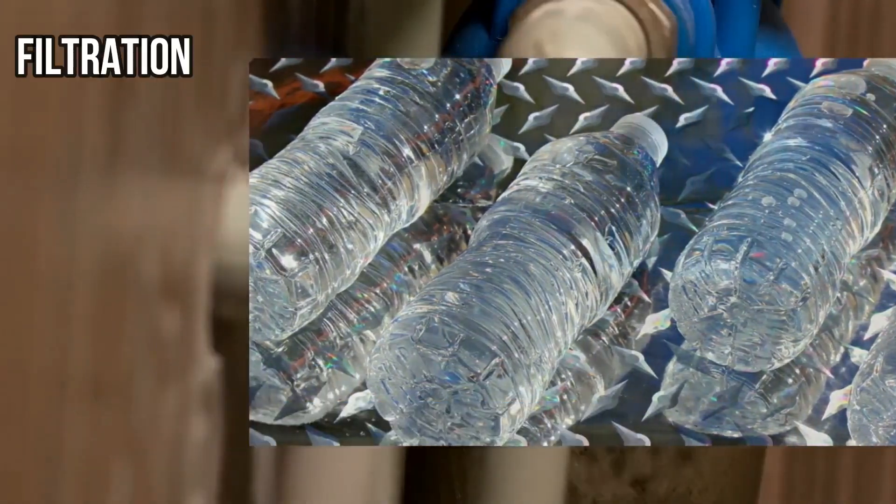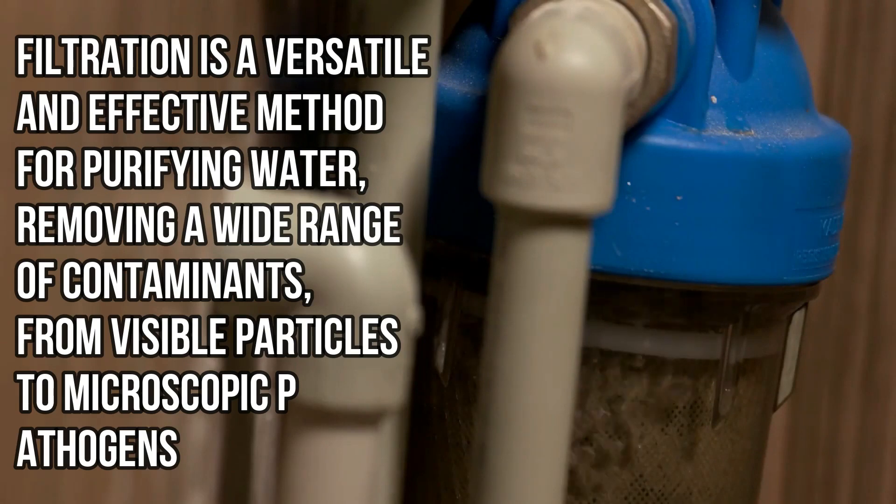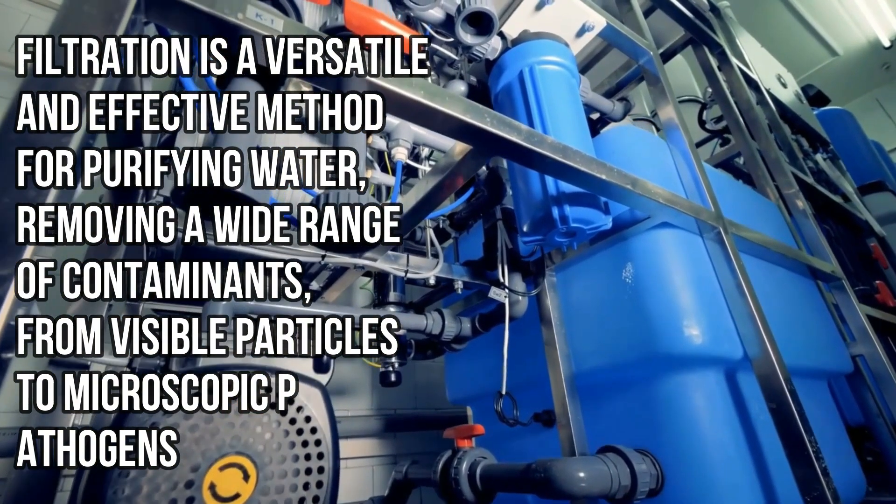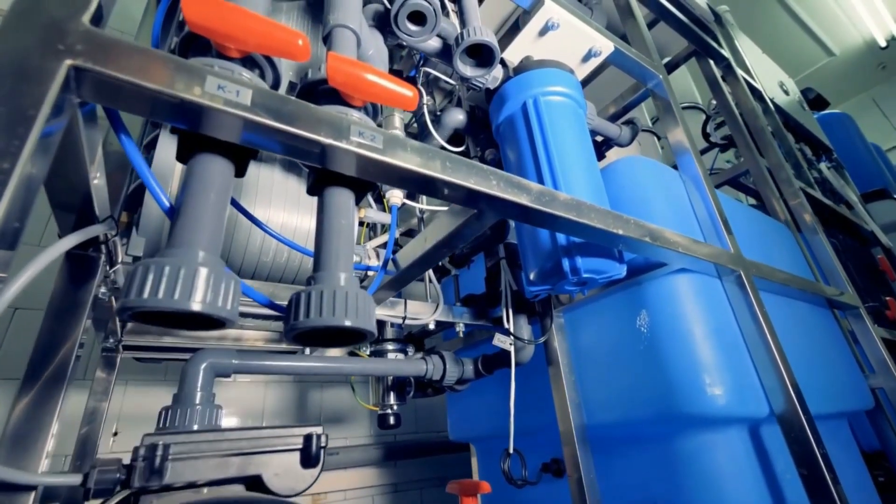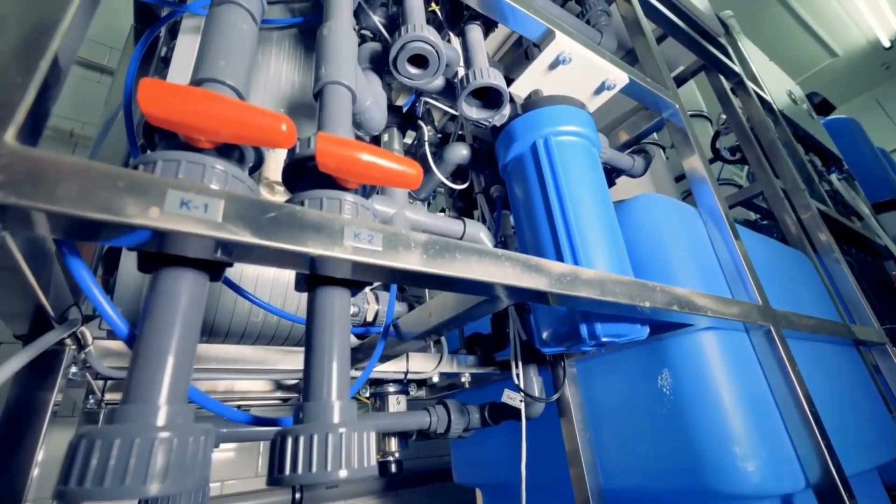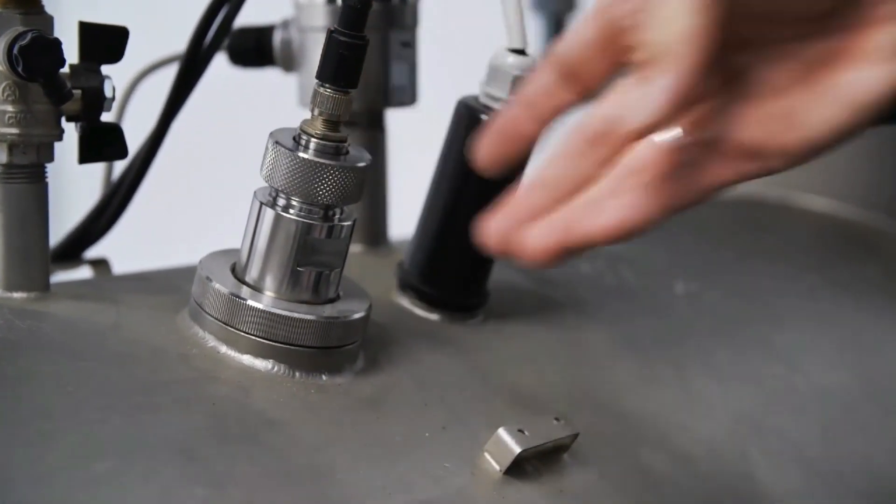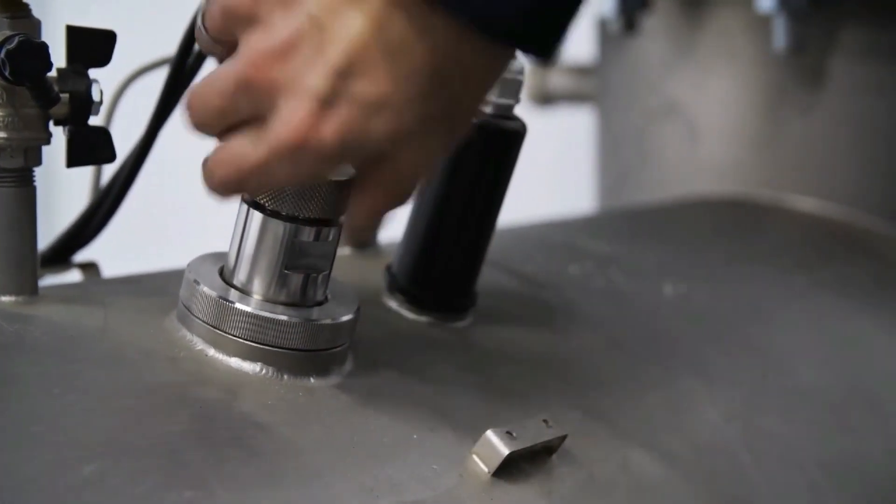Filtration systems. Filtration is a versatile and effective method for purifying water, removing a wide range of contaminants, from visible particles to microscopic pathogens. There are several types of filtration systems, each suited to different needs and scenarios. Here's a detailed look at how these systems work and how to choose and use them appropriately.